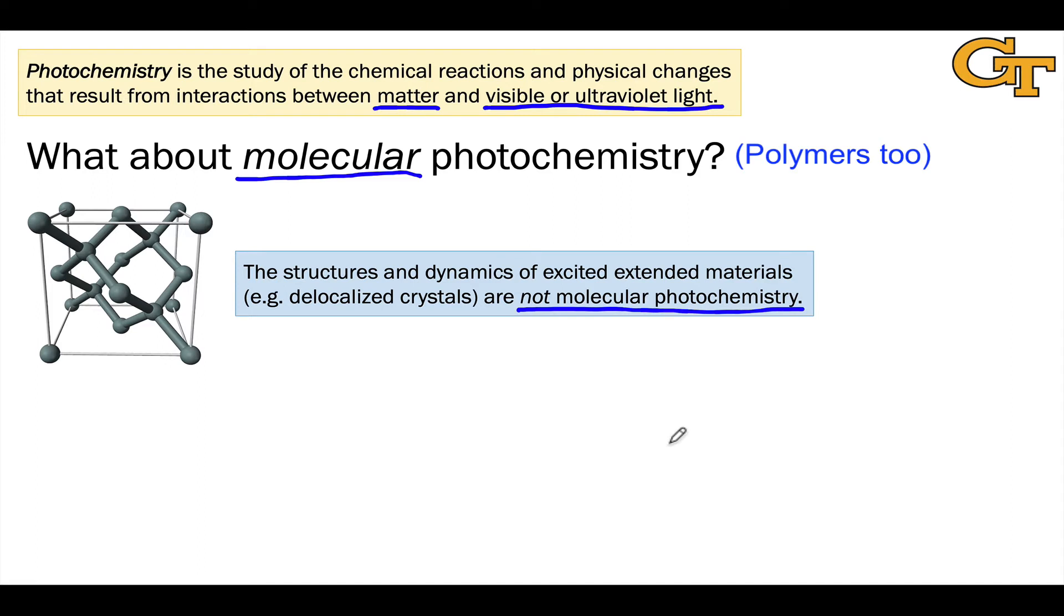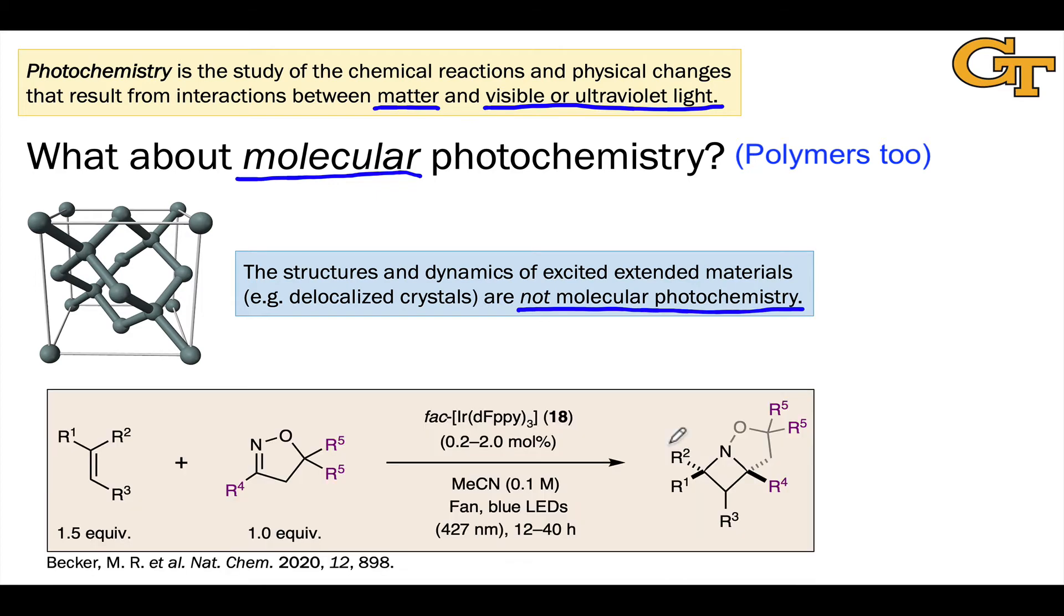We can also talk about polymer photochemistry. That's molecular in some sense since the monomer unit is repeating inside a polymer. We're going to throw that in with molecular photochemistry as well. But network solids, and in particular inorganic network solids like crystalline silicon, are not molecular photochemistry.